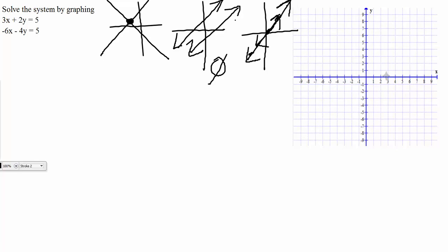This video is going to cover the no solution and the infinitely many solutions cases — what do they look like graphically, or how can we tell? Because most of your instructions are just going to say solve the system or solve the system by graphing. It's not going to stipulate if it's the one solution or one of these special cases. So we need to know, based off of our equations and our graph, which one we have.